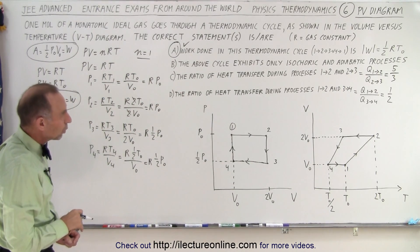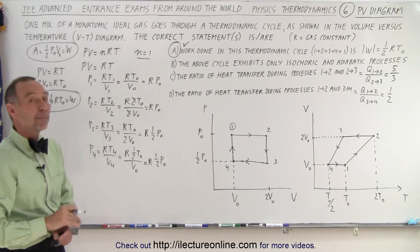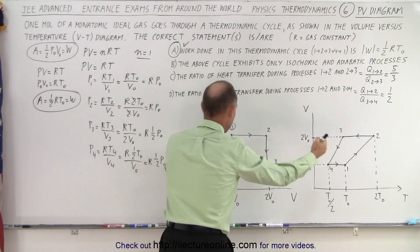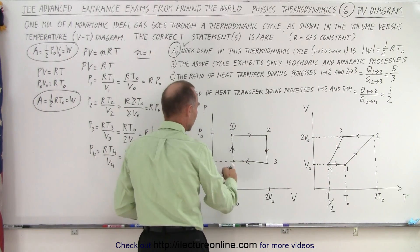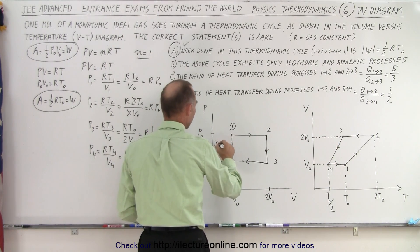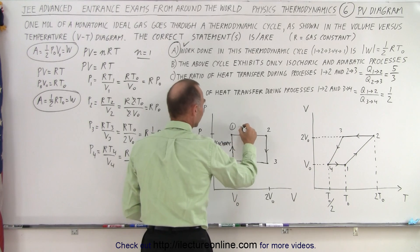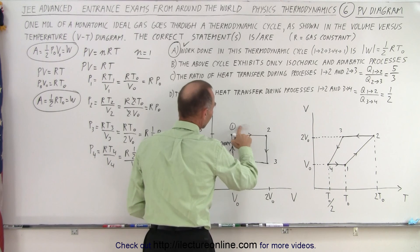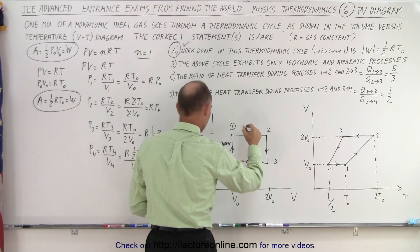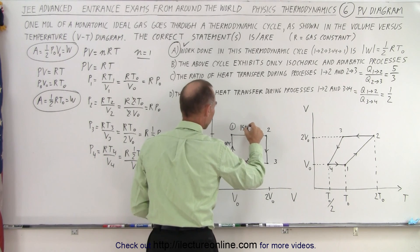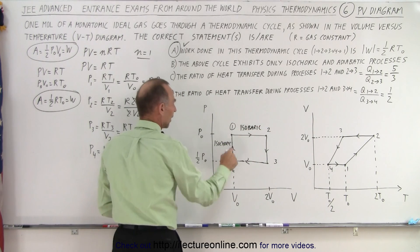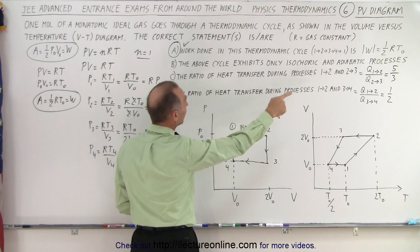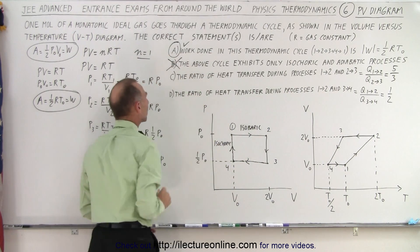Statement B says the cycle exhibits only isochoric and adiabatic processes. Looking at the PV diagram, the vertical segments are isochoric and the horizontal segments are isobaric — constant pressure. There is no adiabatic process anywhere in this cycle. So statement B is not correct.